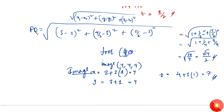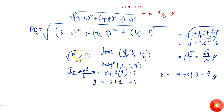To summarize: the foot of the perpendicular is (3, 7/2, 11/2), the length of the perpendicular is √14/2, and the image of point P in the plane is (4, 4, 7).